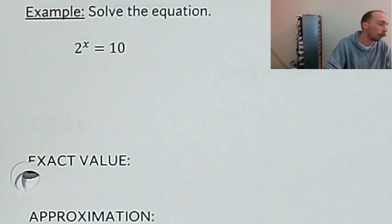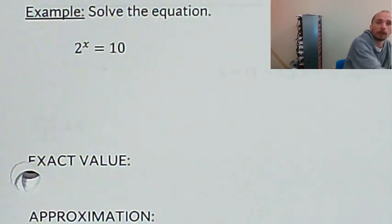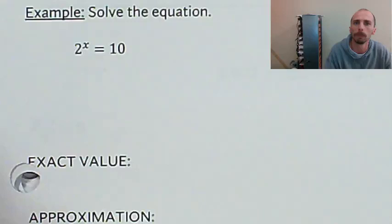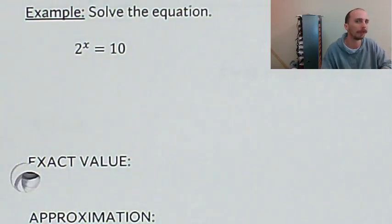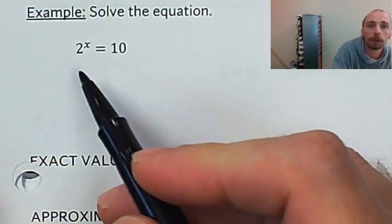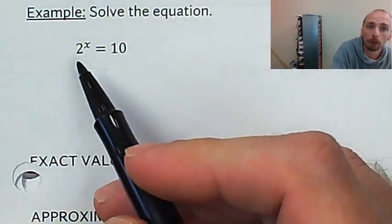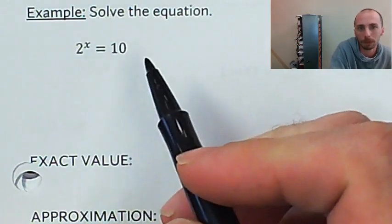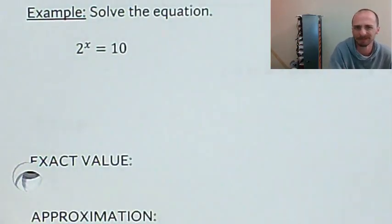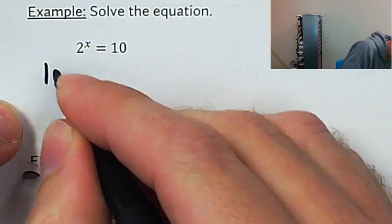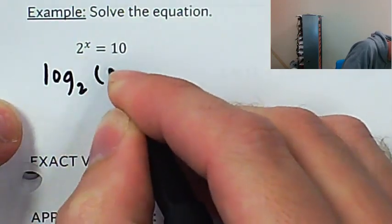What we're going to do to solve these equations is approach it the same way we always approach solving an equation — we're going to be fair to both sides. Anything we do to one side, we do to the other. To get the variable down out of the exponent, the most efficient way is to take the log with base 2 of both sides.